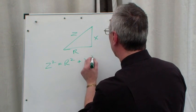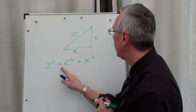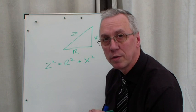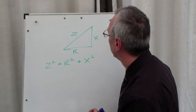So z² = r² + x², or c² = a² + b², going back to the basic ABC system that we've been using.